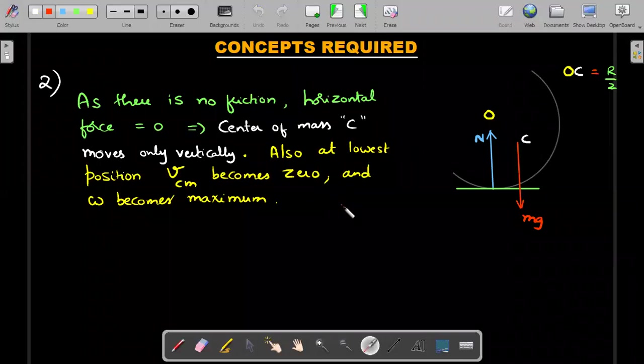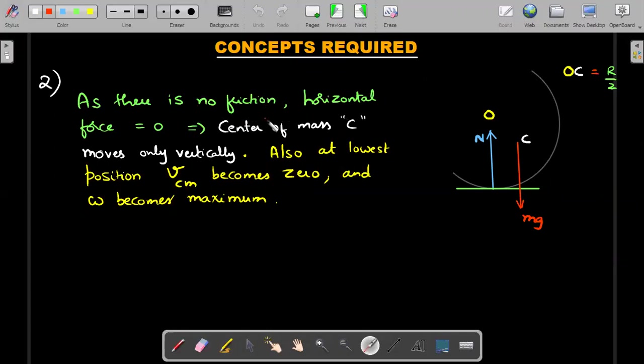Second important point is the free body diagram. Since there is no friction involved in the question, horizontal force on this entire shell would be zero at every instant. Remember the free body diagram forces F external would be mass into acceleration of center of mass. Since there is no horizontal force, we can finalize that center of mass only moves vertically. So C falls only vertically whereas in the previous picture we saw O moves only horizontally. Also at the lowest point, the value of velocity of center of mass should become zero. That is obvious because the point is moving downward and it has to become the lowest position, then the velocity of center of mass should become zero and omega becomes maximum.